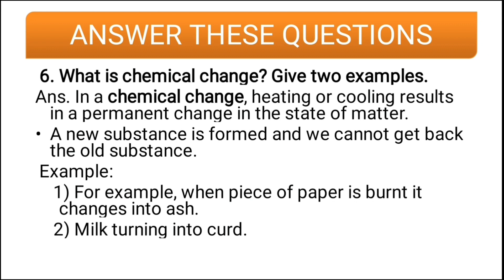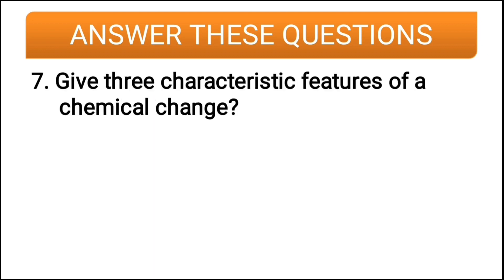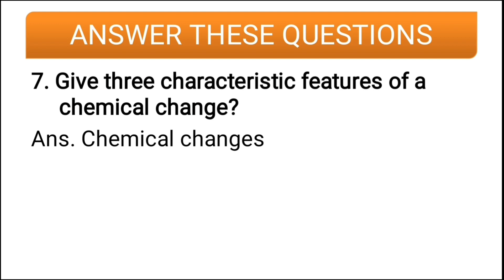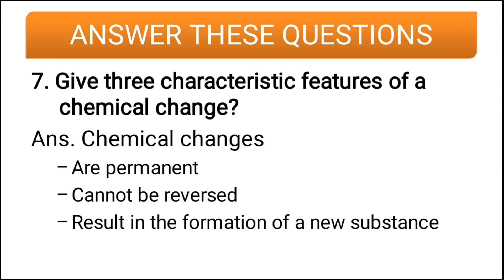The last question for the day: give three characteristic features of a chemical change. Chemical changes are permanent, cannot be reversed, and result in the formation of a new substance. Students, that was all from my side. Thanks for attending this session. I hope it will be helpful to you during exams. See you in the next session with a new topic. Until then, take care. Bye-bye.